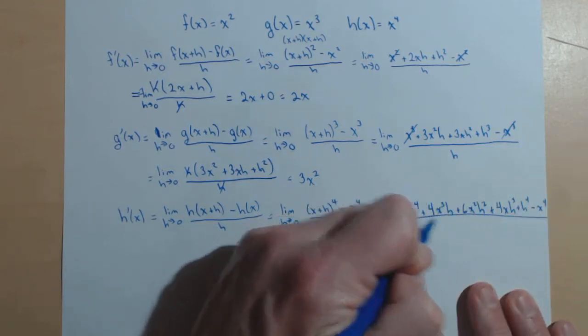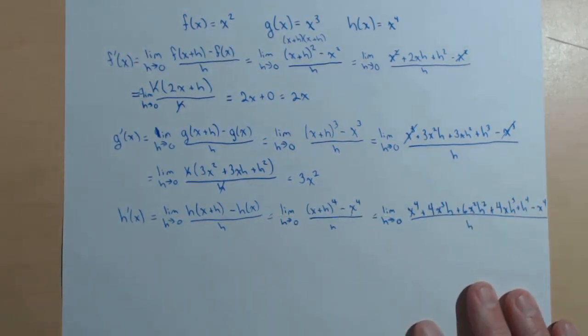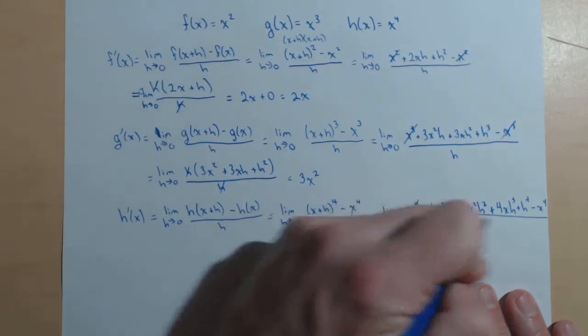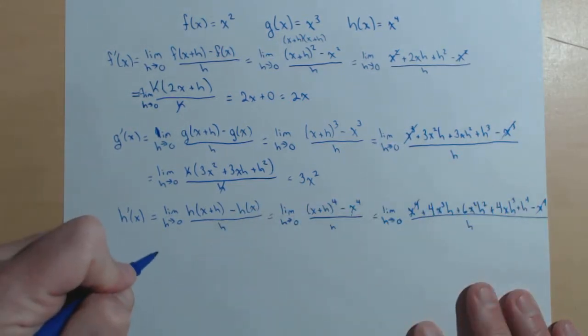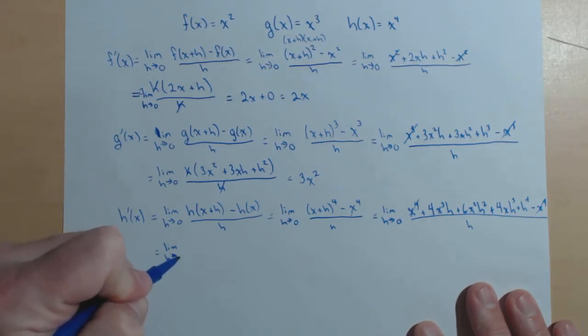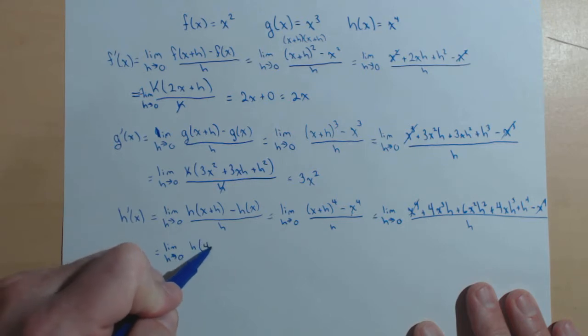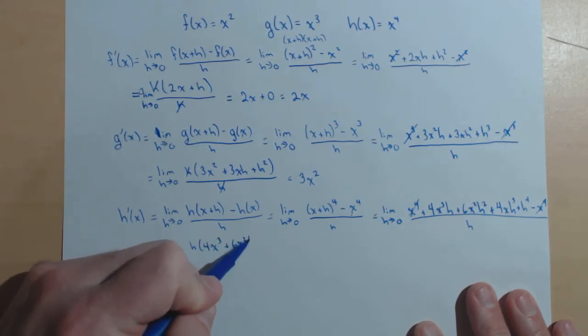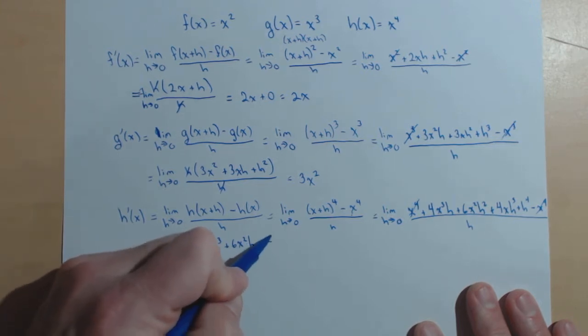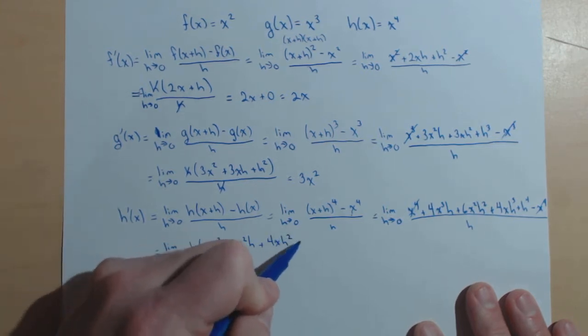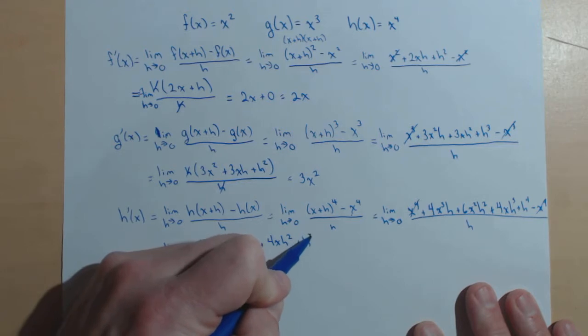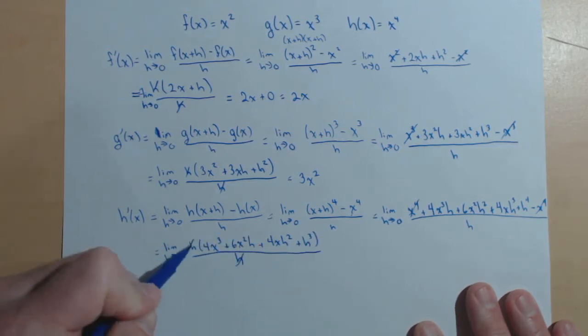And that all is over our h, the one that's keeping us from plugging in zero. Those x to the fourths cancel, and now we can factor out the h in the numerator. So, h times 4x cubed plus 6x squared h plus 4xh squared plus h cubed, all over h. Those are nice enough to cancel for us.